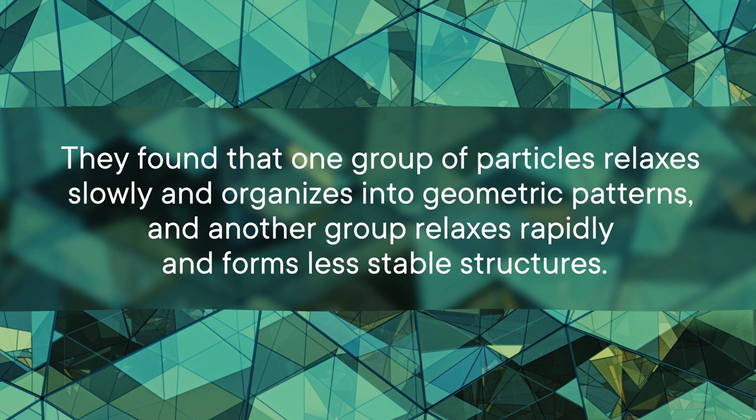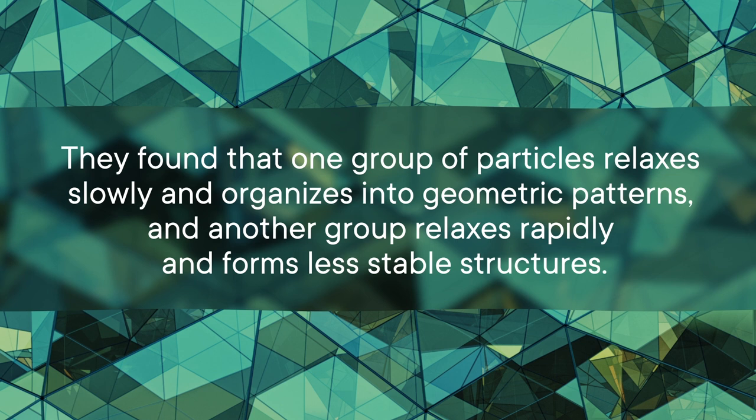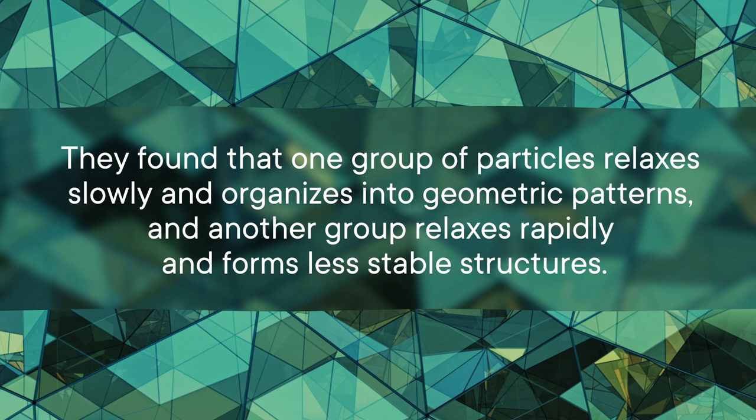And they found that one group of particles relaxes slowly and organizes into geometric patterns, and another group relaxes rapidly and forms less stable structures. So now we know that glass particles can behave multiple ways as they're cooling down. But that clearly isn't the whole answer yet. Then, in January 2021, another group used simulations and experimental data to investigate what was going on as glass cooled from a liquid to an amorphous solid.